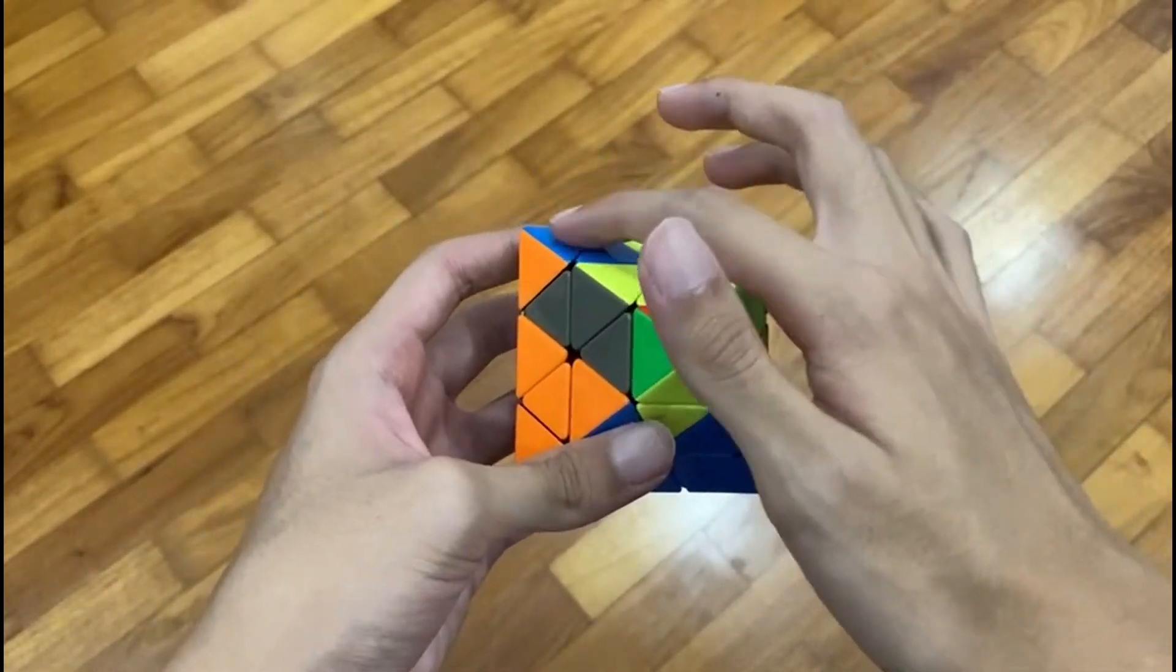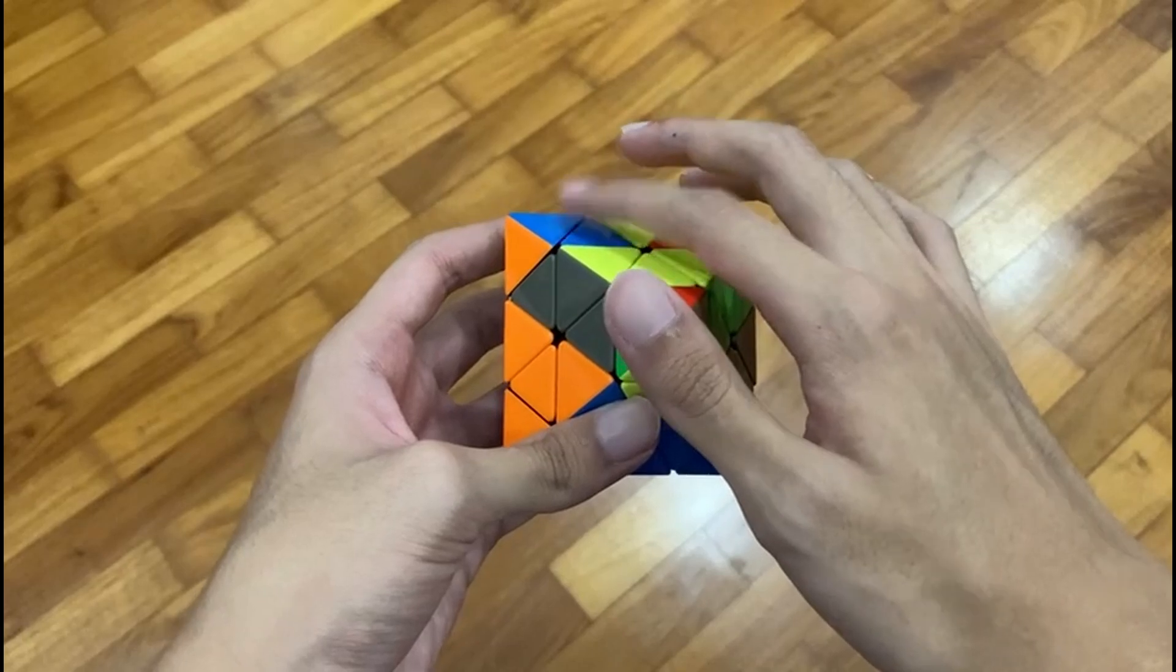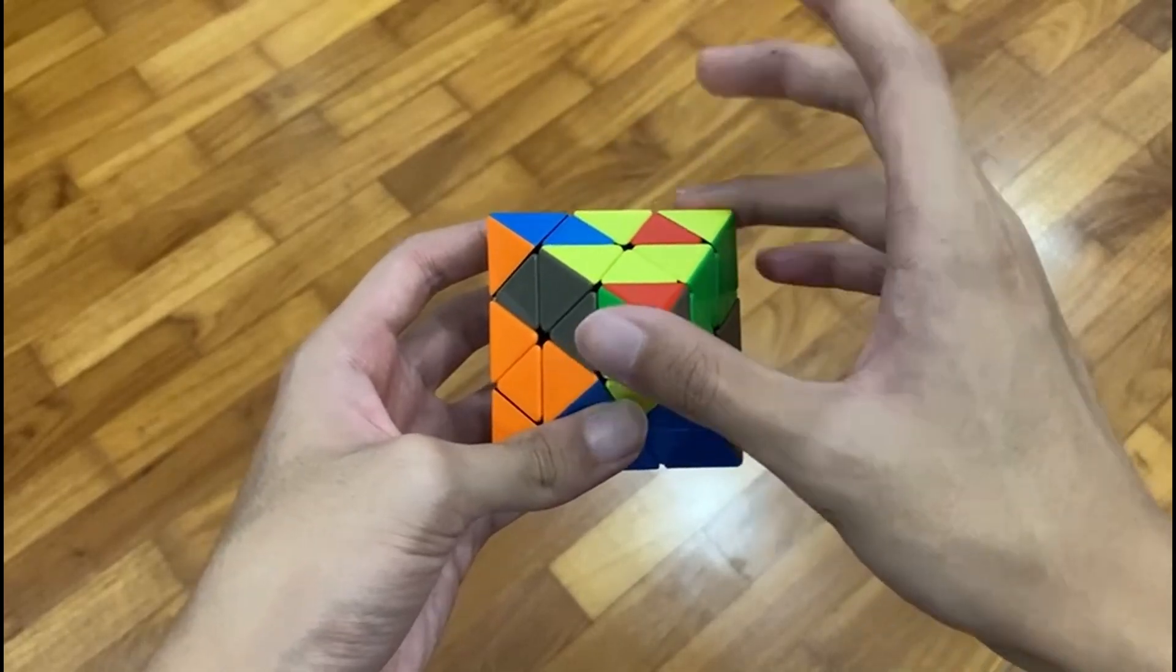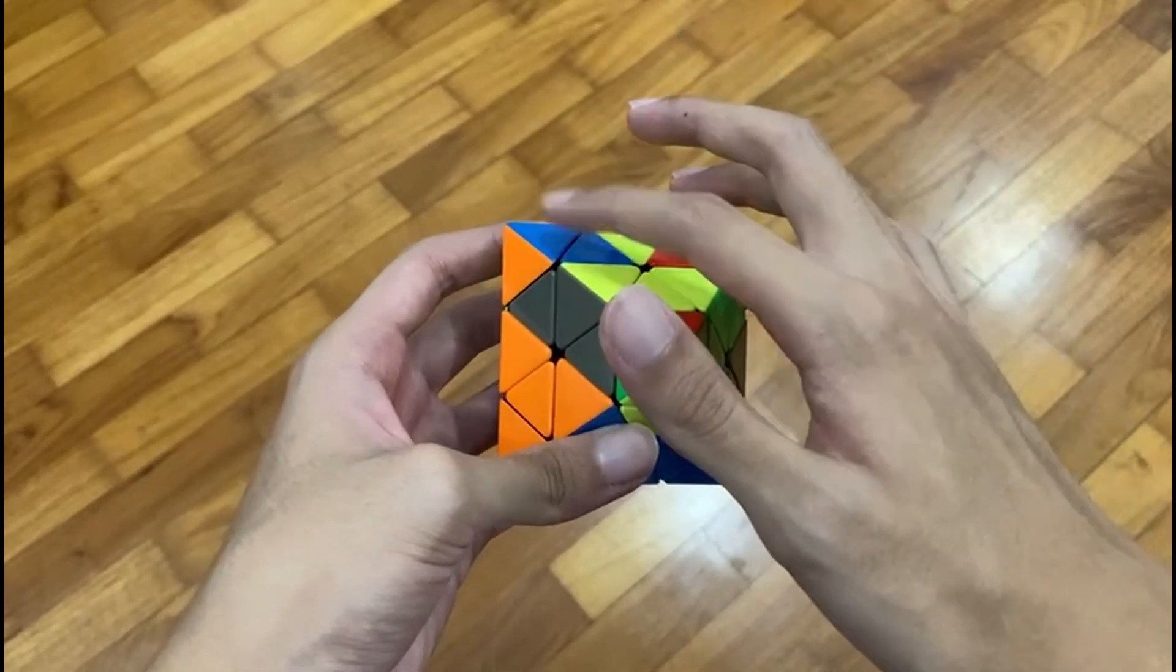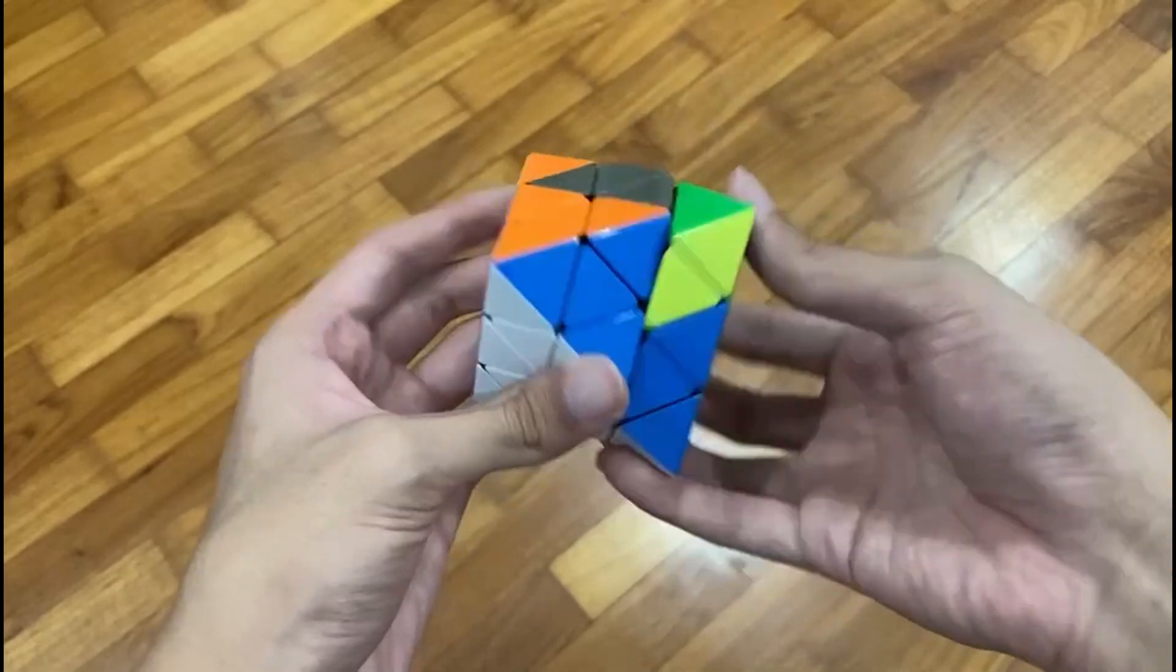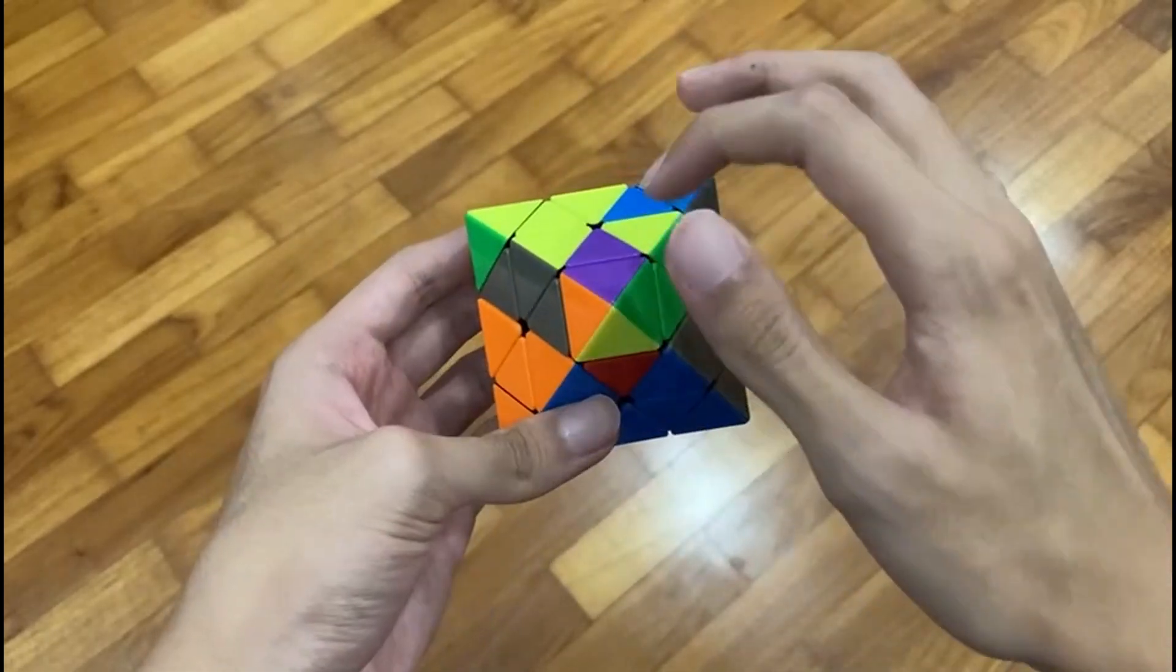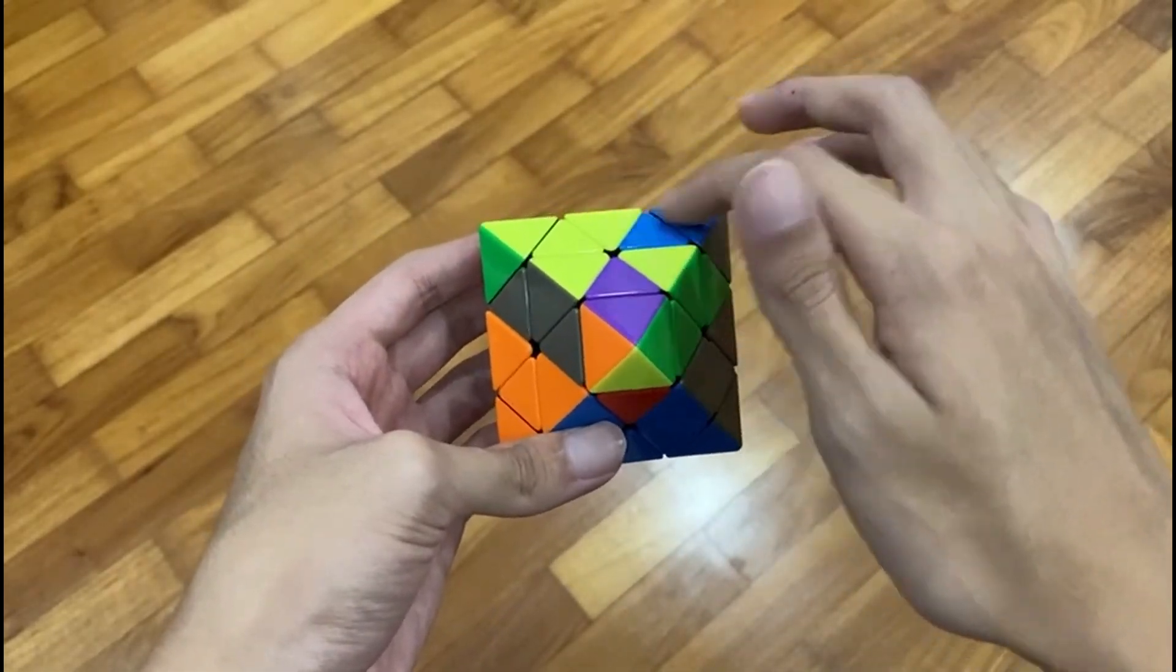So, something to take note of is that every triplet that goes onto the top left corner always gets preserved and these two get flipped. So, if you want to preserve a triplet, keep it on the top left corner and just do a hedge or a sledge. And now, we've got both our triplets on the top layer.